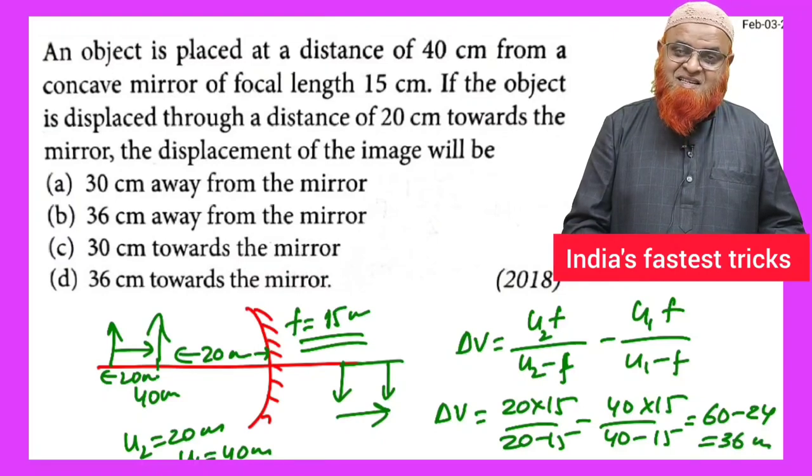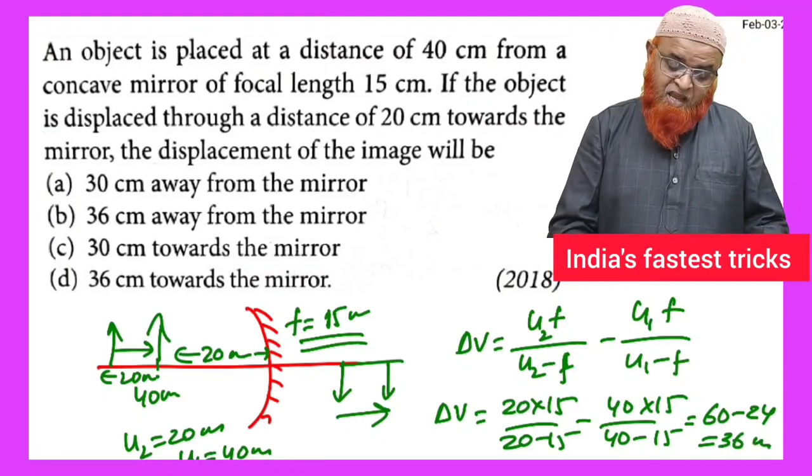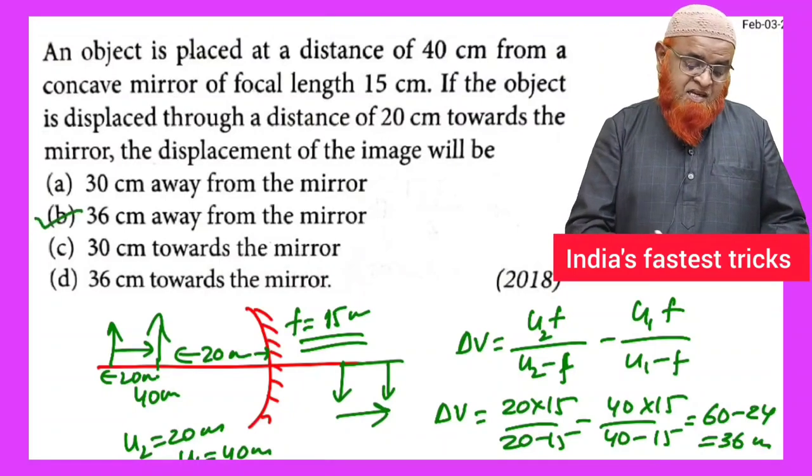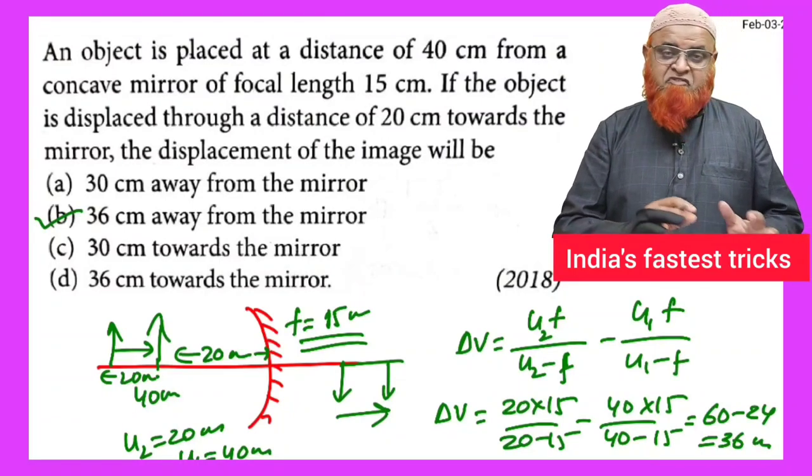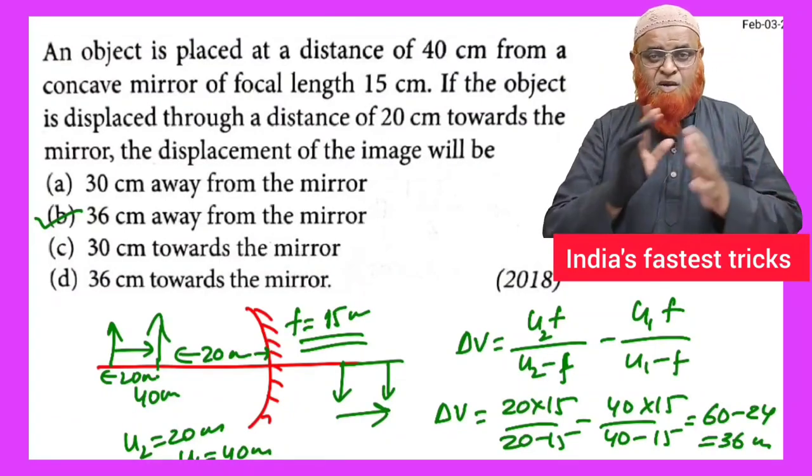So your answer is 36 centimeters away from the mirror because when object is closer, images are farther.